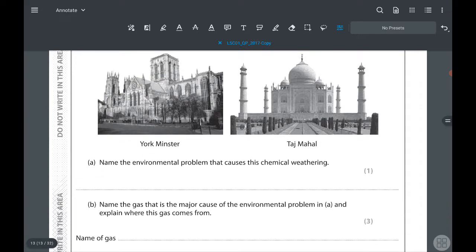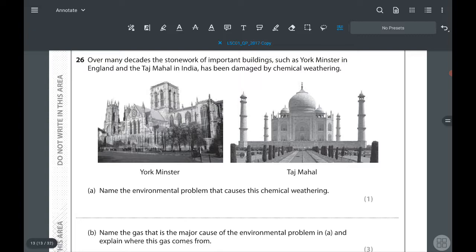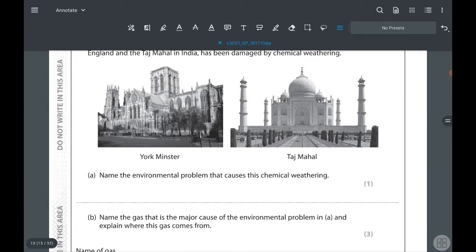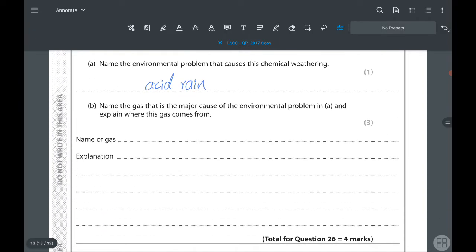26th question: over many decades, the stones of important buildings such as York Minster in England and the Taj Mahal in India have been damaged by chemical weathering. Name the environmental problem that causes the chemical weathering. That is called acid rain. Name the gas that is the major cause of the environmental problems in air and explain where this gas comes from. The gas which is affecting most is sulfuric acid, so the gas is sulfur dioxide.